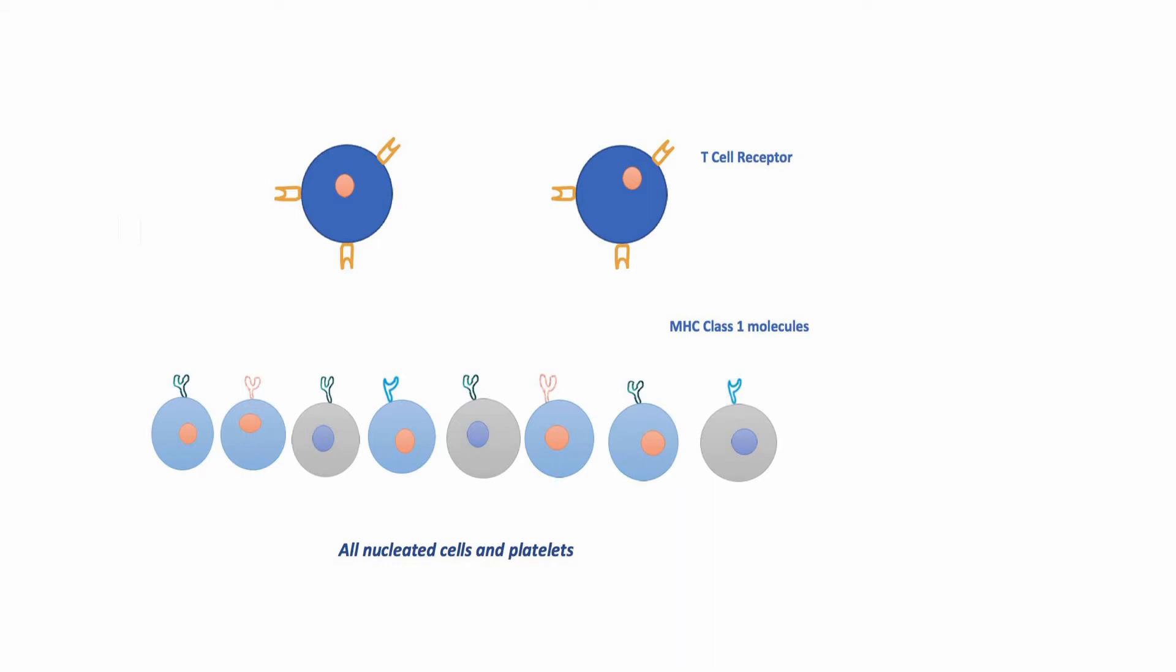All nucleated cells in the body have MHC or HLA class 1 molecules on the cell surface. These molecules take self and non-self peptides from the interior of the cell and present them on the cell surface, where these peptides are assessed by cells of immune response that are T cells. T cells also have corresponding receptors on their cell surface that are called T cell receptors.